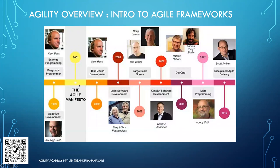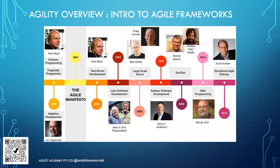Even before the Agile Manifesto was created, Ken Schwaber, Jim Highsmith, and others developed Extreme Programming, with practices like pair programming, TDD, and BDD. Scrum was also established before the manifesto. Sometimes people get caught up in debates about which is better, but in a nutshell, 2001 was when the manifesto was formally created. After that, several frameworks got established, and we'll look at a few today to understand how best to apply those learnings as an agile leader.